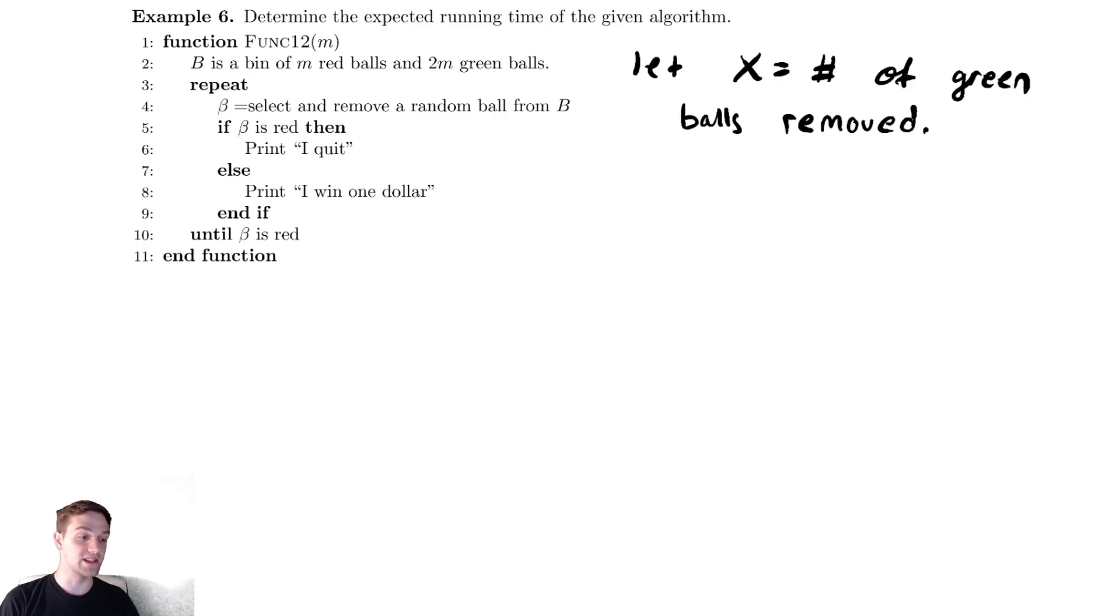And we want to know what is the expected number of that, like we've done several times in the past, because we can compute the run time is a constant plus a constant times x, so the expected time is c plus c times the expected value of x, so we need to understand that variable. This might not be so bad at first, but let's see what happens.